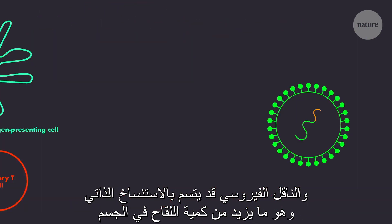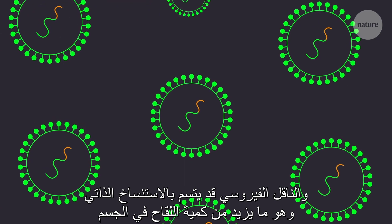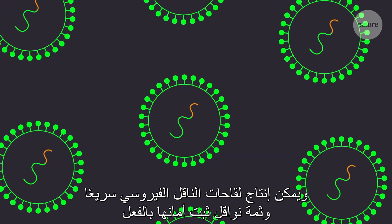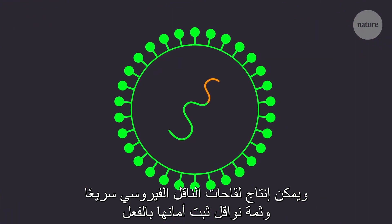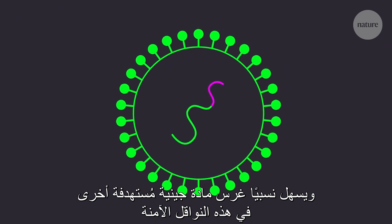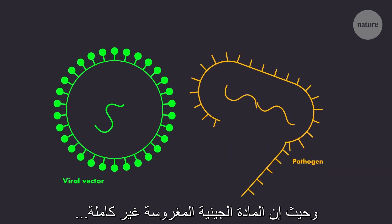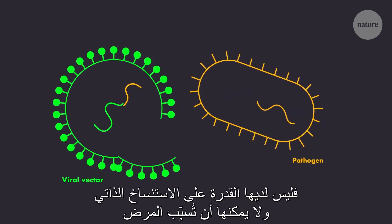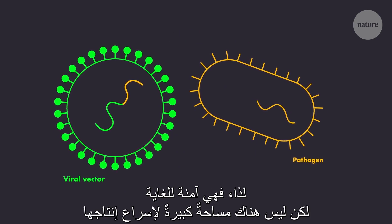The viral vector may even be self-replicating, increasing the amount of vaccine in the body. Viral vector vaccines are also quick to produce. Safe vectors have already been established and it is relatively easy to insert different target genetic material into these established carriers. And as the genetic material inserted is incomplete, they can't replicate and cause disease — so they're also very safe.